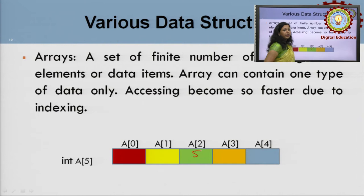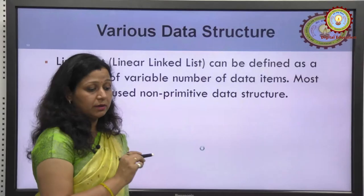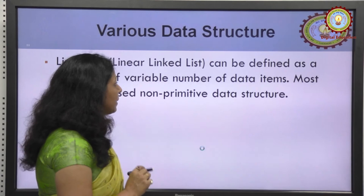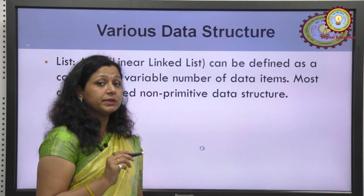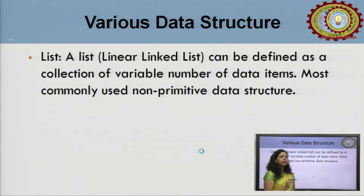Next is linked list — a very important and popular concept of data structure, widely used in different real-world applications. A linked list can be defined as a collection of a variable number of data items. Unlike arrays which store homogeneous data (same data type only), in a linked list there is no such restriction — we can store items of different data types. It is the most commonly used non-primitive data structure.